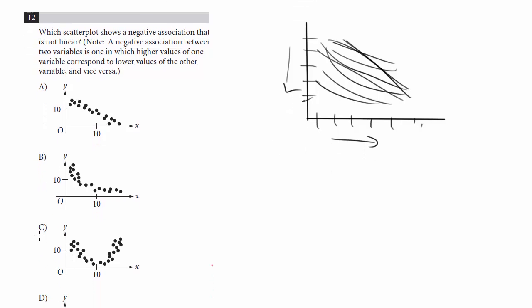So right away we can get rid of C because it's like a U shape, and we can get rid of D because D's got no relationship.